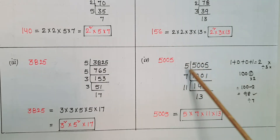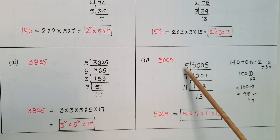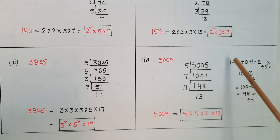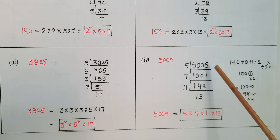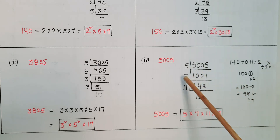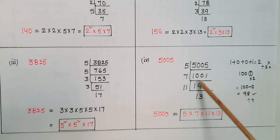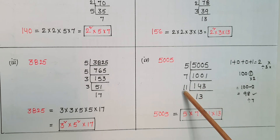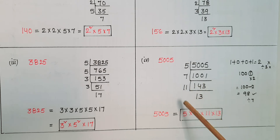The next number is 5005. The last digit is 5, so divide by 5: 5005 ÷ 5 = 1001. For divisibility by 3, add all digits: 1+0+0+1 = 2, which is not divisible by 3. Trying 7: 1001 ÷ 7 = 143. Then dividing 143 by 11 gives 13. Since 13 is prime, we stop. So 5005 equals 5 into 7 into 11 into 13.